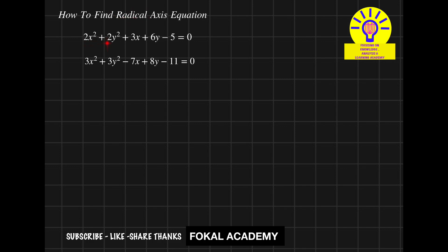First, we convert these two circle equations into standard form. The standard form of a circle equation is x² + y² + 2gx + 2fy + c = 0. Here, the x² and y² coefficients must be 1.